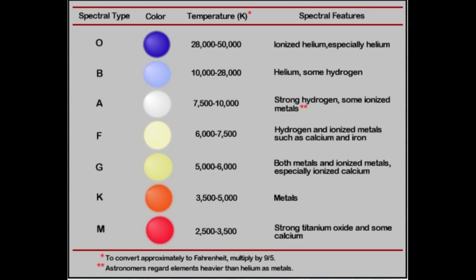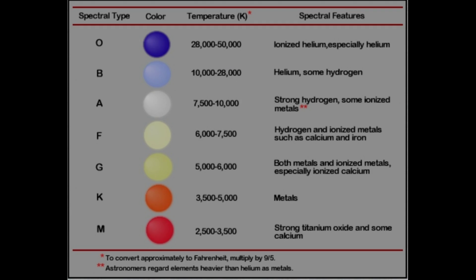There are numerous different kinds of stars, and their life cycles are affected primarily by their mass and their temperature. The most common stellar classification system, the Morgan-Keenan system, uses the letters O, B, A, F, G, K, and M to classify main sequence stars.